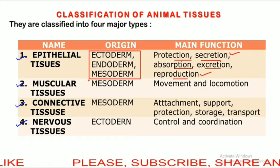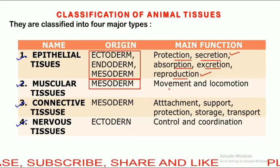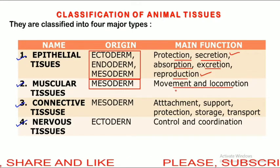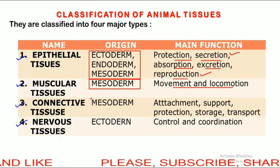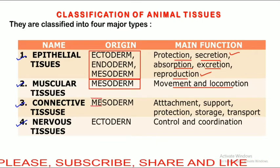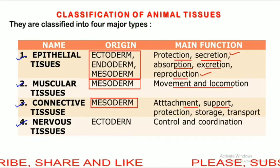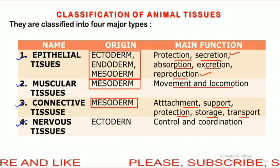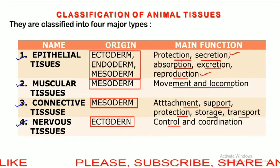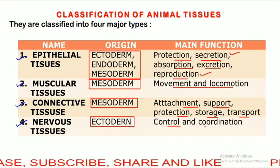Muscular tissues are originated and developed from the mesoderm, and their function is locomotion and movement. Connective tissues are also developed from the mesoderm, and their function is attachment, support, protection, storage and transport. Nervous tissues are originated from the ectoderm and their function is control and coordination.